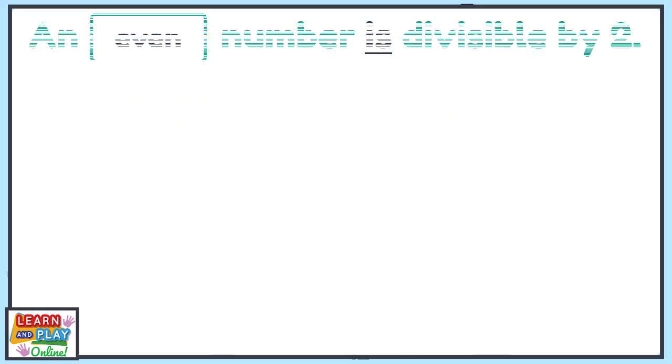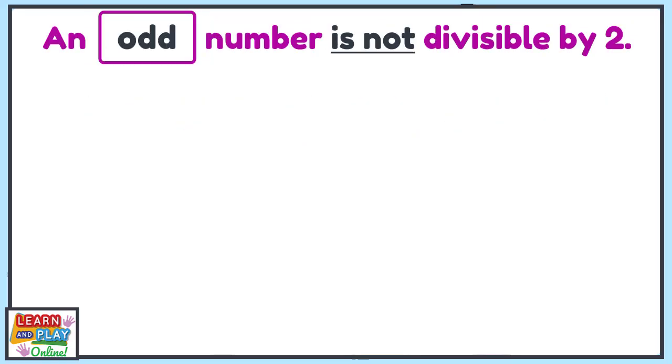Let's recap what we know. Odd numbers are not divisible by 2 as they would not produce equal groups. Odd numbers end with the numbers 1, 3, 5, 7 and 9.